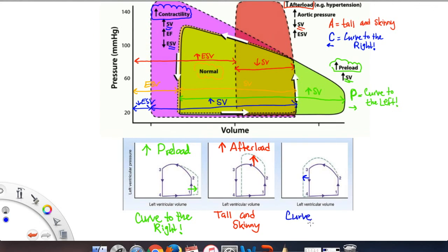And lastly, the last curve, the loop is to the left. And what did we say? Which one was to the left? Increased contractility because when you write C, it is to the left.